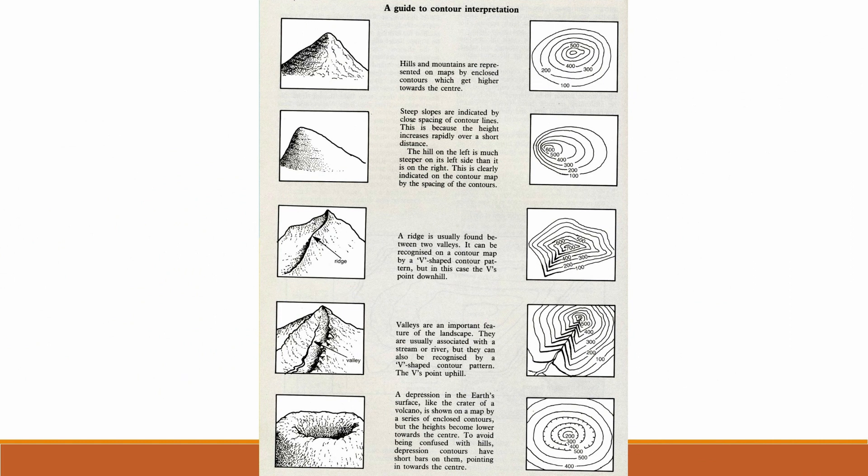Here are some other useful contour interpretations. We can see hills and mountains are normally concentric circles. We can see that if there's a ridge, there is a V-shape in the third diagram. And we can see if there's a valley, and how that also is indicated in a V-shape as well. And we can also see depressions in the Earth's surface, like a crater, which is shown on the map by a series of enclosed contours, where the height becomes lower. To avoid confusing the last one with hills, the depression contours have short bars on them that point towards the centre of the depression.